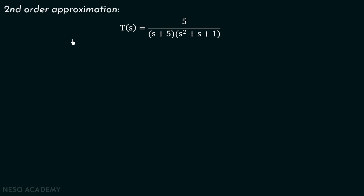From the previous lecture we know we need to verify two conditions to approximate a transfer function. Condition number one is that the ratio of the insignificant pole to that of the significant pole should be greater than or equal to 4. In this case it is equal to 10, so it is definitely greater than 4.